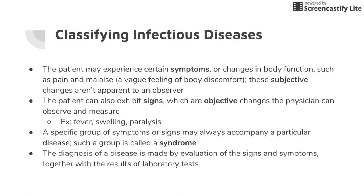Signs are objective changes — something a physician, nurse, or clinician can actually observe. For example, sticking a thermometer in your mouth to determine fever, looking at swollen ankles, or determining someone is paralyzed. Those are signs — something we can actually prove, versus symptoms which are just what somebody tells us. When particular signs and symptoms consistently go together with a particular disease, we call that a syndrome. For example, a runny nose, sore throat, cough, and fever together describe a cold.